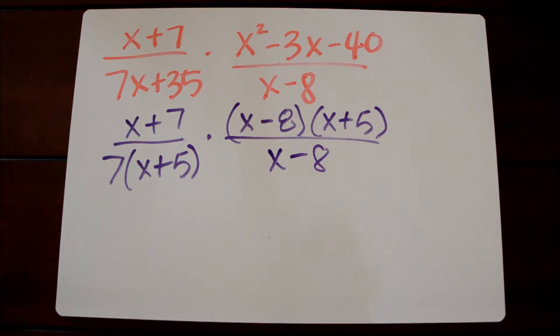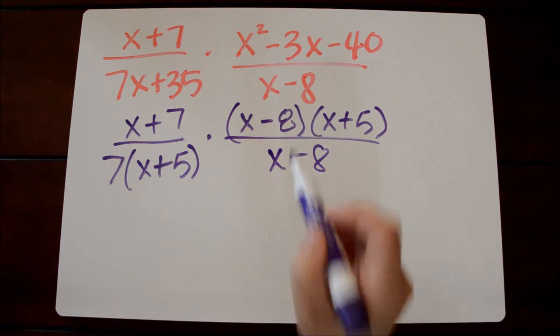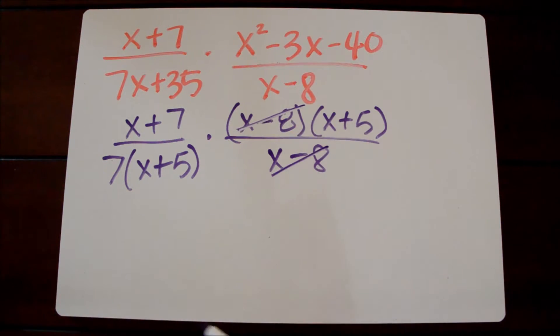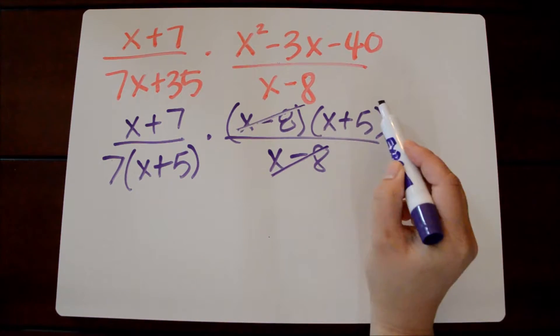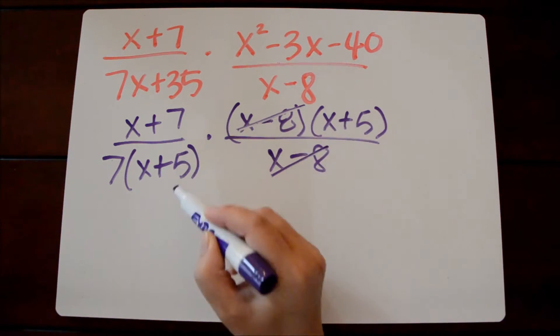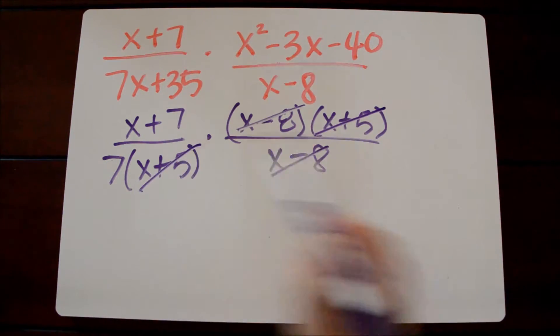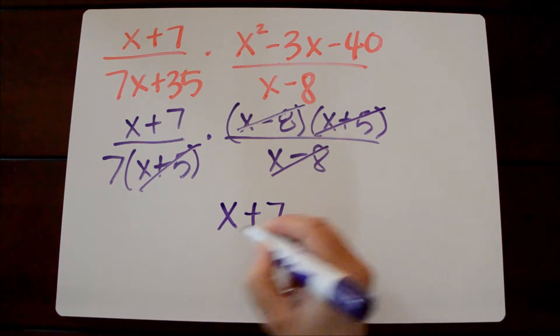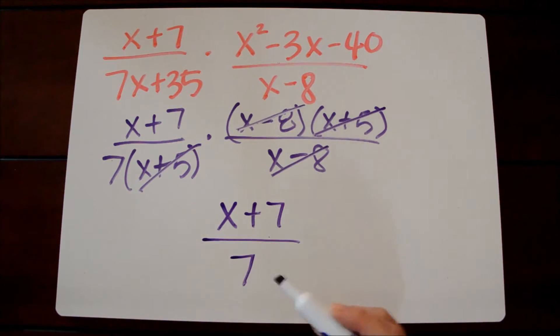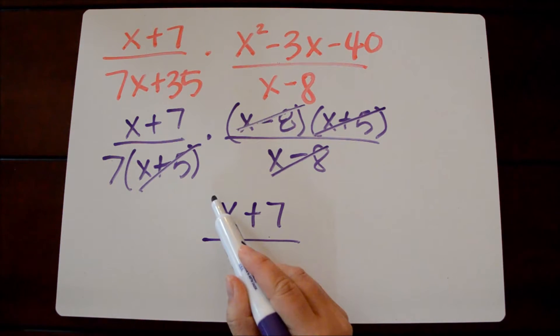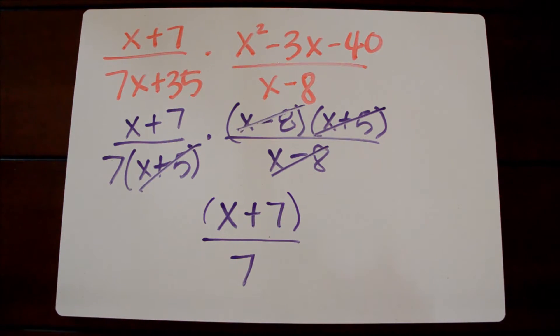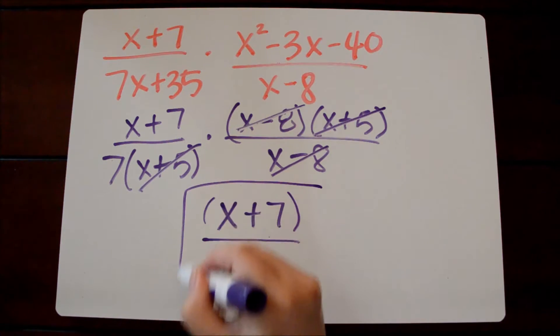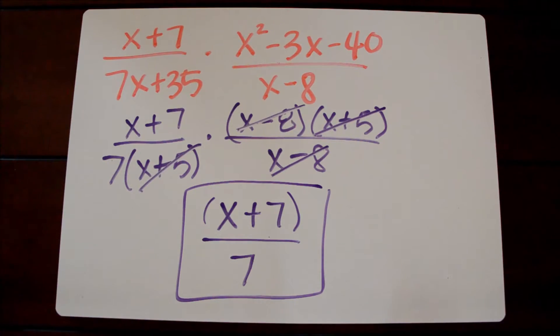So anything divided by itself will equal 1 so we could 1 it out. We'll 1 out the x minus 8. We'll also 1 out the x plus 5. And then all we're left with is x plus 7 over 7. A common misconception is that people will want to 1 out the 7's but we can't do that because x plus 7 is a quantity together. The 7 is not separate from that. So that is our simplified expression.